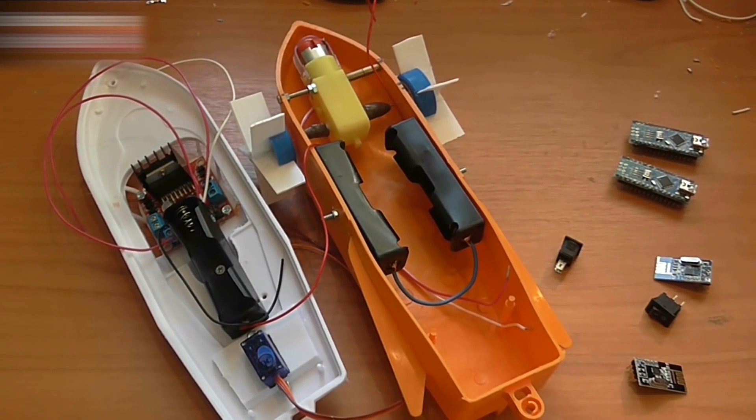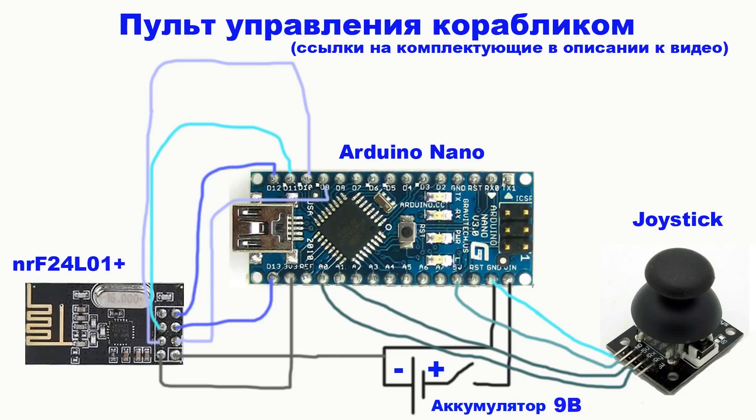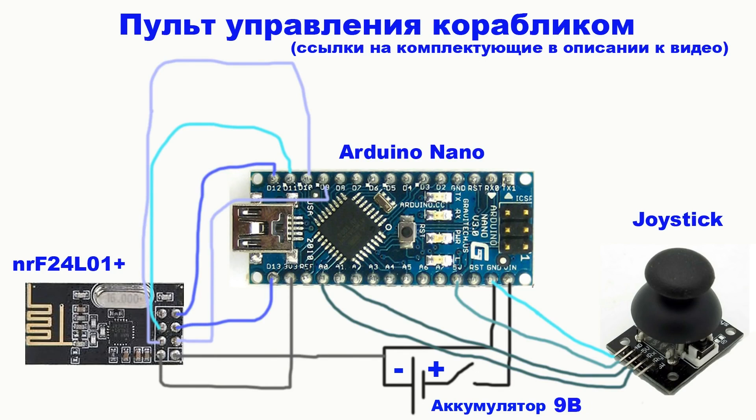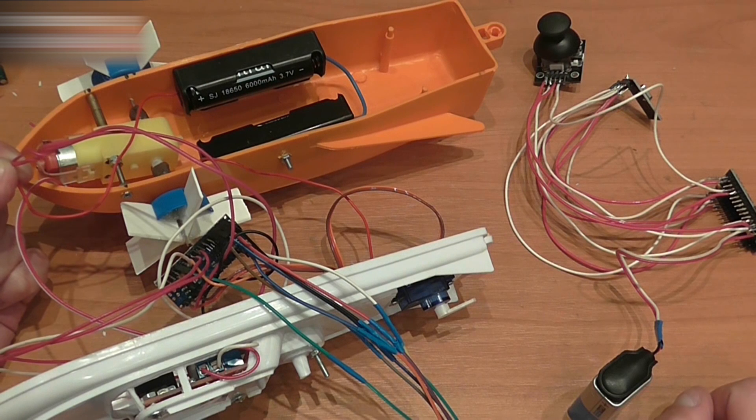Assemble the remote and all the electronics by the following schemes. Boat remote. The links for the parts are in the video description section. 9V Battery. Boat electronics. The sketches are in the video description section. Motor. 12V Battery.